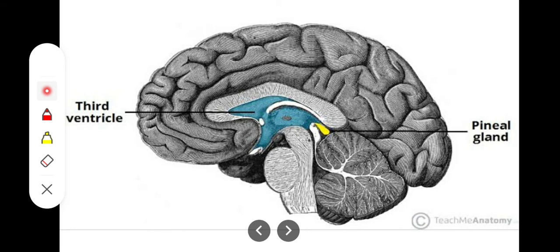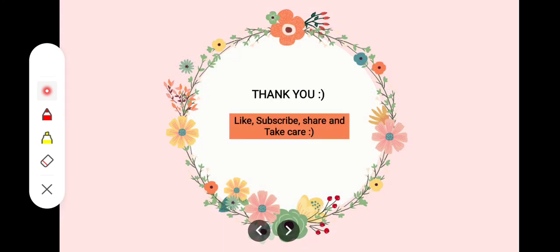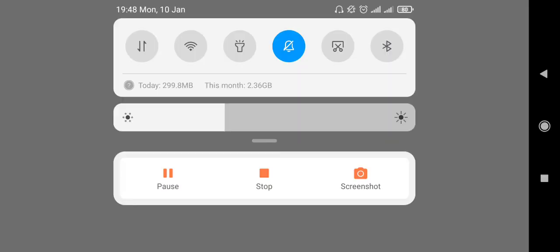So these are the two structures we have in the epithalamus: the habenular nuclei and the pineal gland. In the subthalamus, we saw some red nucleus and substantia nigra portions which came from the midbrain and are involved in muscle activity control. With this, we are done with both the epithalamus and the subthalamus. I hope it was helpful — thank you so much.